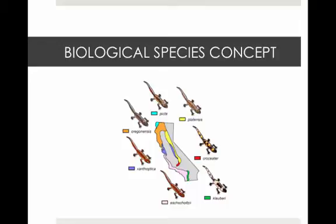It was defined by Ernst Mayr, an evolutionary biologist, in 1942. The definition also includes that individuals cannot produce fertile offspring with members of other species due to reproductive barriers.